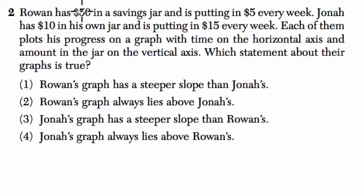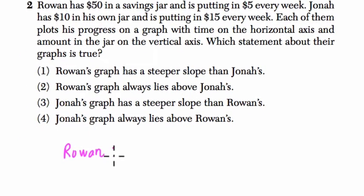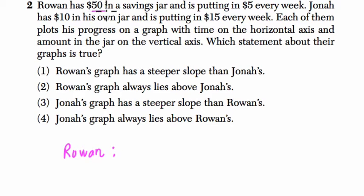Okay, let's read the question. Rowan has $50 in a savings jar and is putting in $5 every week. So I'm going to pause and say this is for Rowan. I'm going to write that down in an equation. That's usually where we're going with these type of problems. We're starting off with 50, and then that's our intercept, our starting point, our y-intercept. This is a linear function. You can tell because it's adding a constant amount each week. That's $5, so it's $5 for every week. I'll call it x. This is our slope.